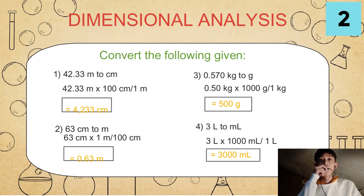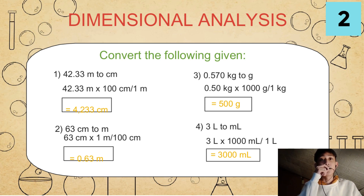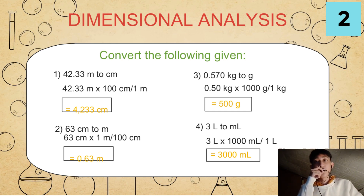First, we will convert 42.33 meters to centimeters. In order to do that, we will use 42.33 meters times 100 centimeters over 1 meter, and it will be equal to 4,233 centimeters. The second one is we will convert 63 centimeters to meters, using 63 centimeters times 1 meter over 100 centimeters, so we will get 0.63 meters.